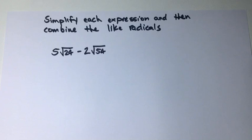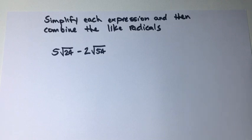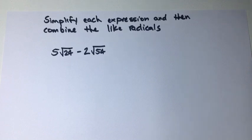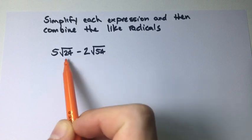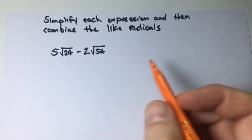In this example we want to simplify the expressions and then combine like radicals. In our first example we have 5 times the square root of 24 minus 2 times the square root of 54. We're going to use the product rule for radicals to reduce these and simplify the square root of 24 and the square root of 54.